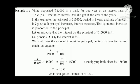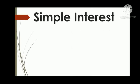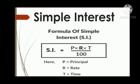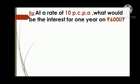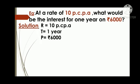This is one method of solving sums on interest. The other method is by using the formula: Simple Interest equals P into R into T upon 100, where P is the principal, R is the rate, and T is the time. For example: at a rate of 10% per annum, what would be the interest for one year on rupees 6,000? Given: rate 10% per annum, time 1 year, and principal amount is rupees 6,000.